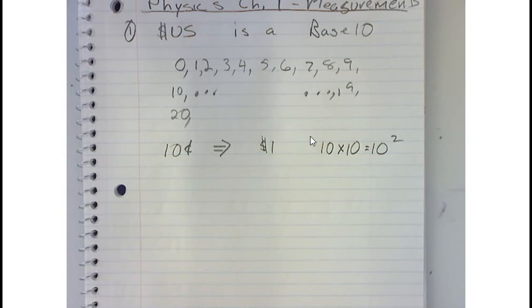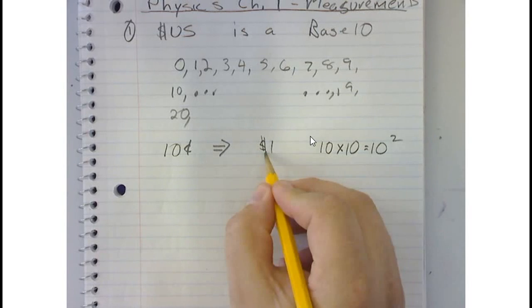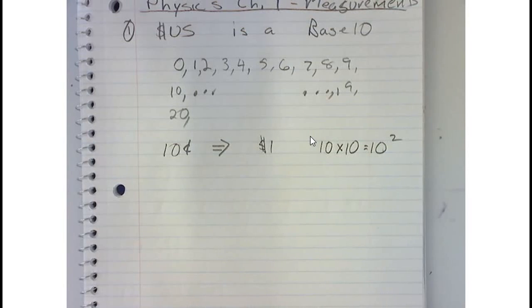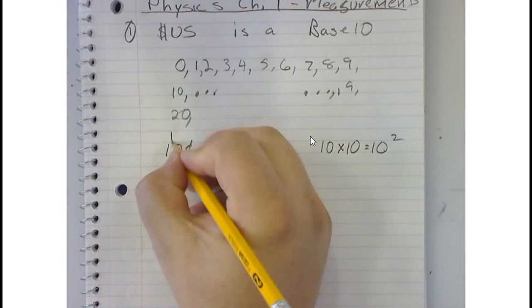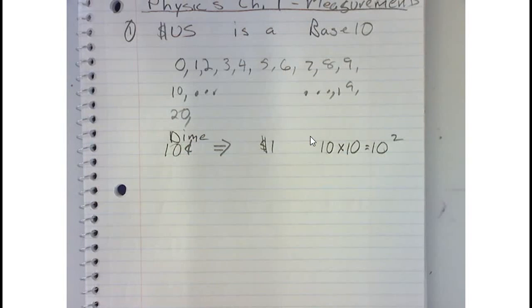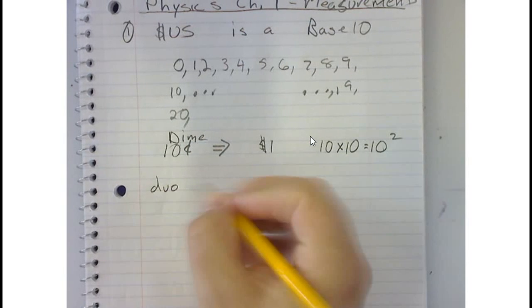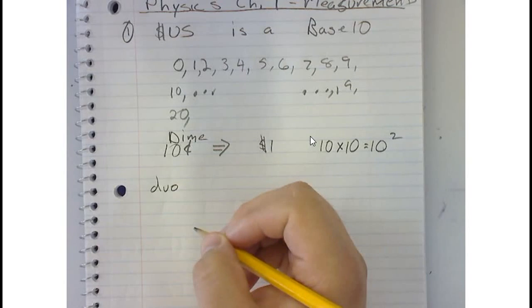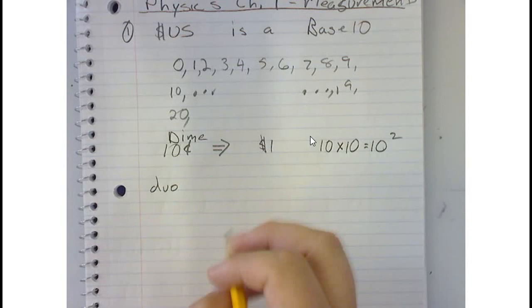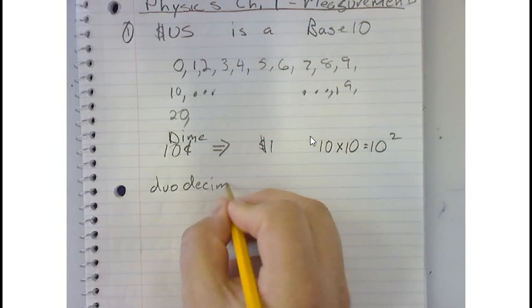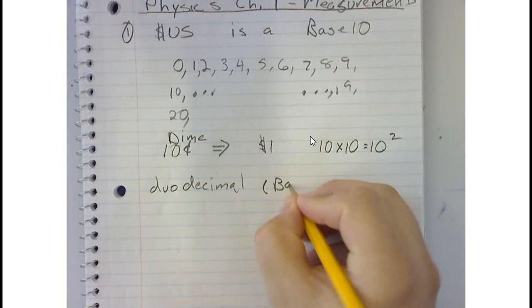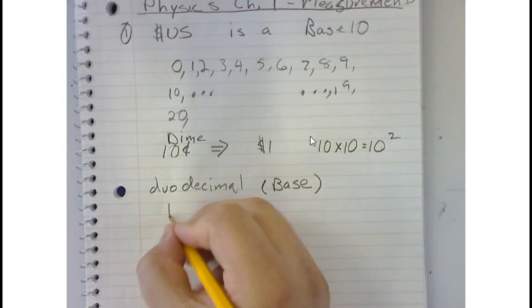Discuss the ramifications of our monetary system if it had a duo-decimal base. What are the possible values of our coins if they were in this case? So a dollar is really 10 times 10, or 10 squared, if we're talking about a 10 base system. A duo-decimal, that's a 12 base system.